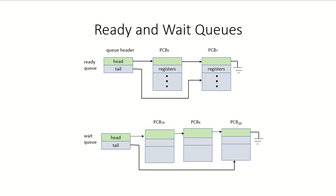Let's look at the structure of the ready and wait queues. The process control block (PCB) is the data structure associated with each process, and these are what populate the queue. There is a queue header with a head pointer pointing to the first process in the queue, represented by its PCB, which contains all information about the process. Each PCB has a pointer to the PCB of the next process in the queue, and the queue header also has a tail pointer pointing to the last process.